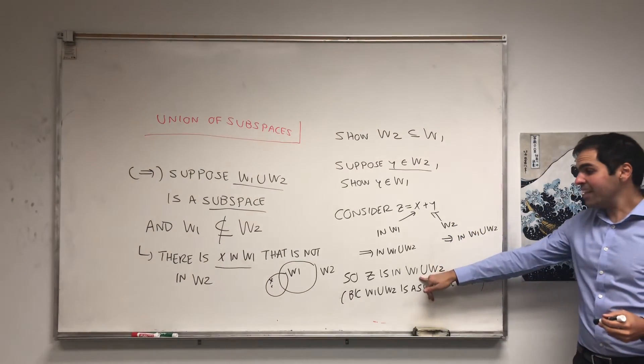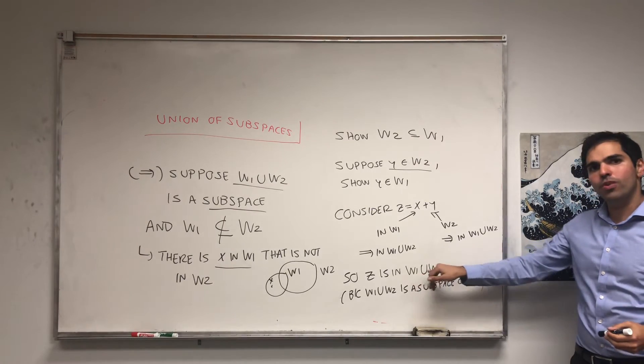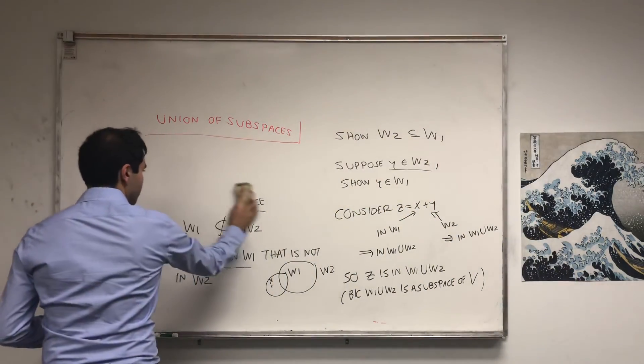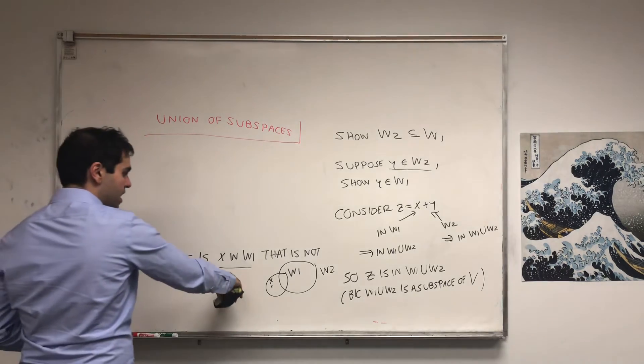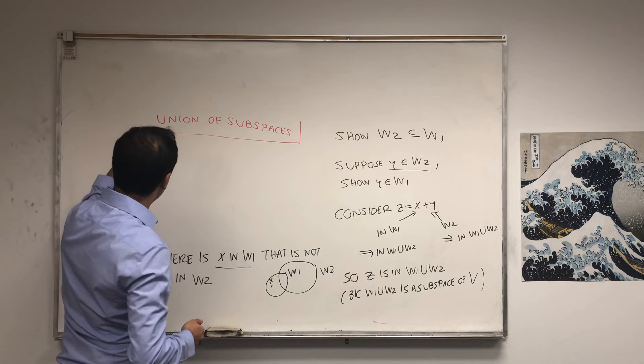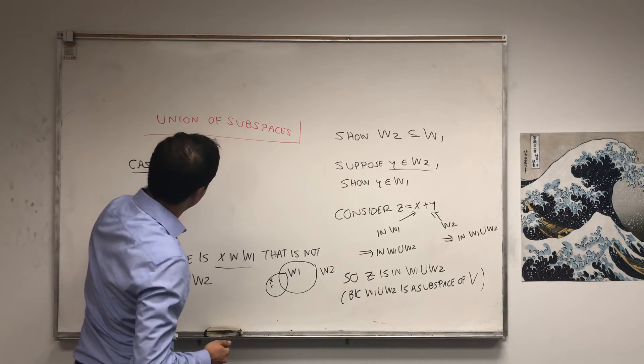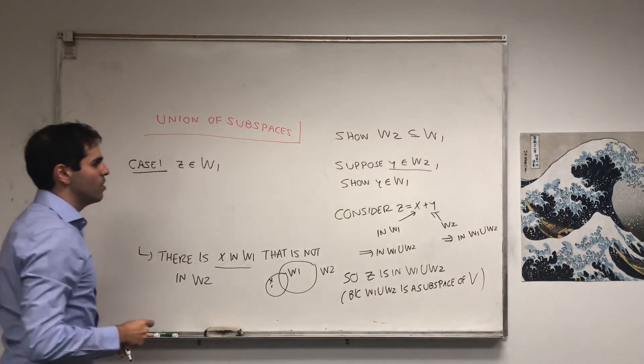Now, what does that mean? It means that either z is in W1 or it's in W2. So, let's argue in cases. And again, we will need that fact that x is in W1 but not in W2. So, case one. z is in W1. Again, it's either in W1 or in W2.